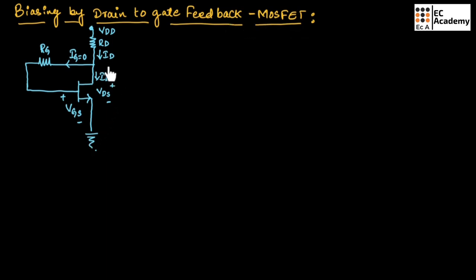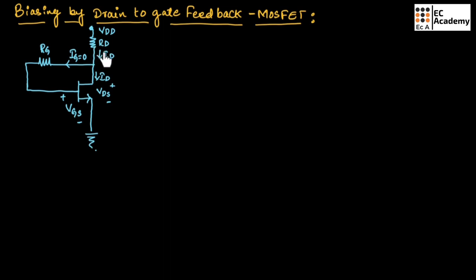This is the circuit for biasing by drain-to-gate feedback. In this circuit, as you can see, a resistor is connected between drain terminal and gate terminal. This resistor is known as feedback resistor. Here, RD is the output resistance or drain resistance, and RG is the feedback resistor.